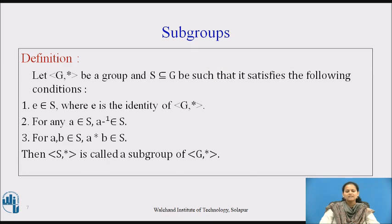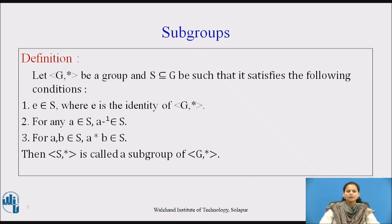Here is the answer: let G, star be a group and S is any subset of G such that it satisfies the following conditions. Number 1: e belongs to S, where e is the identity of G, star — which means the identity of the given group G is also present in the subset defined over G. Number 2: for any a belonging to S, a inverse also belongs to S — which means if you take any element from the given subset S, the inverse of that element must also be present in the same set S. And number 3: for a, b belonging to S, a star b also belongs to S — simply the property that the operation star is closed under S.